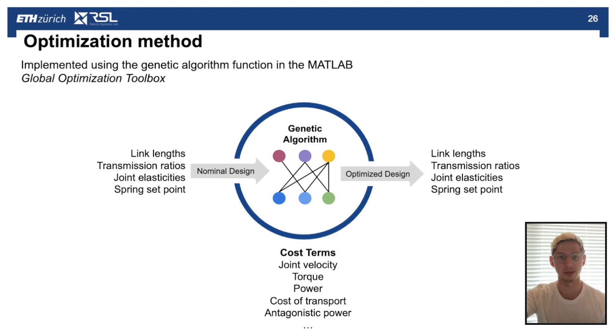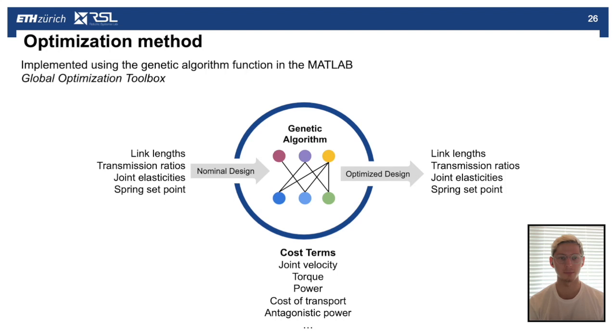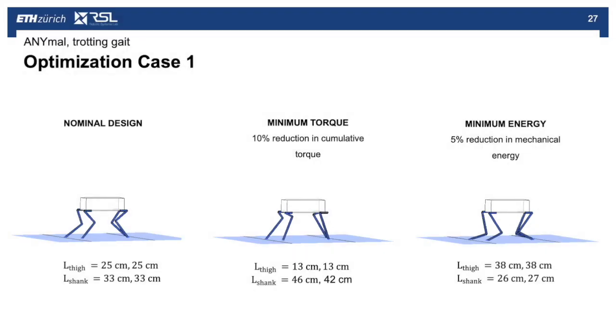We now run the optimization using the genetic algorithm function in the MATLAB optimization toolbox. The design parameters here can include link lengths, transmission ratios, spring constants, and the spring set point, which is the angle of the spring relative to the angle of the joint. We can consider multiple cost terms at the same time in the cost function, however we prefer to consider just one at a time. That way we avoid having to delicately tune the weight of different cost terms against one another. We'll now consider four different optimization cases for different robots.